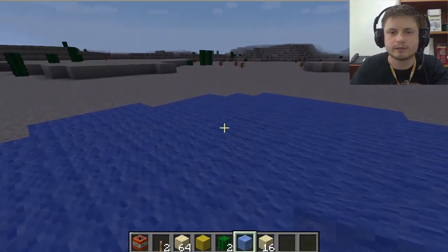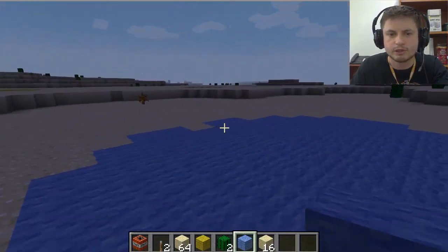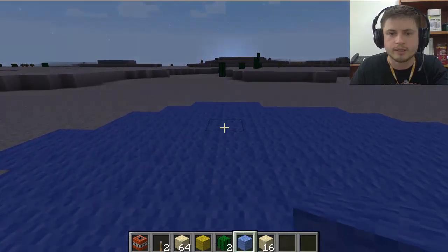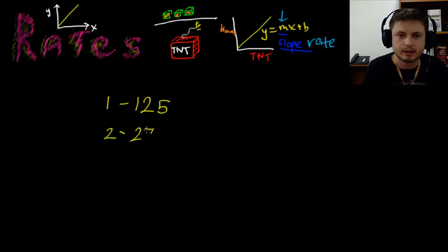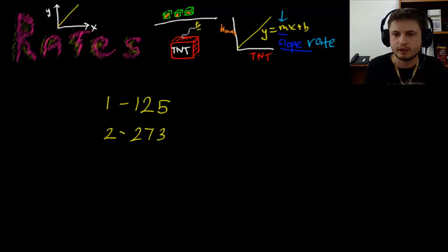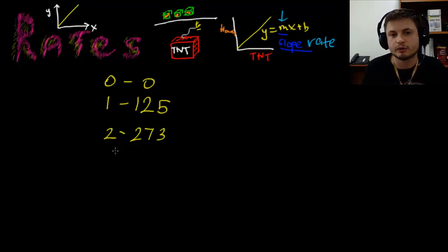273! So my second value is 273, shown in a blue box. So let's go into our GDC and figure this out. We have two values: for one TNT I had 125 blocks destroyed, and for two TNTs I had 273. And obviously at zero we have zero blocks destroyed, because when there's no dynamite no blocks are destroyed.